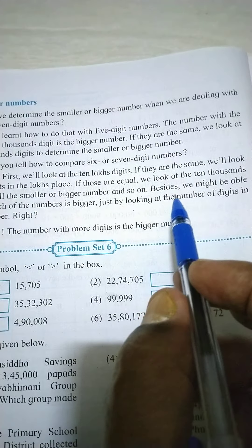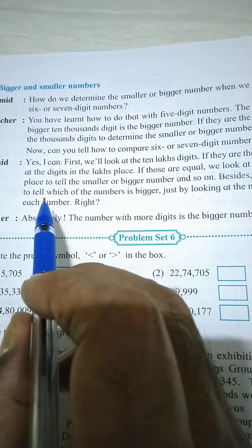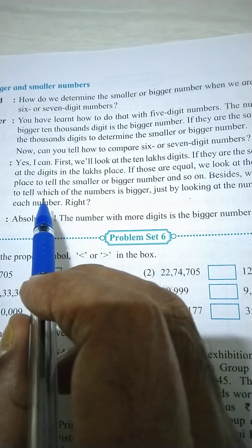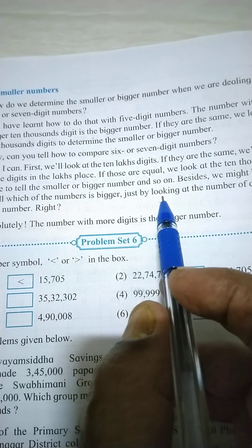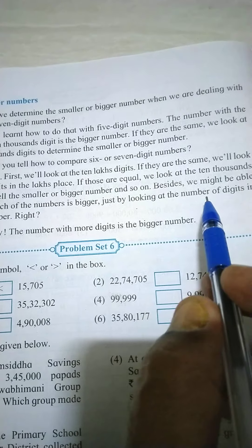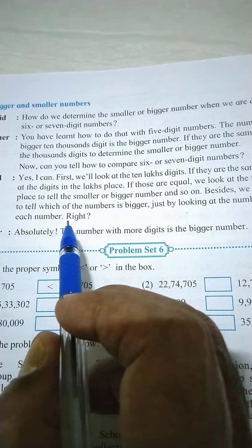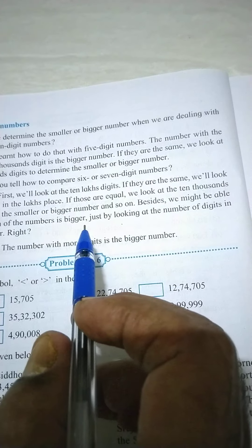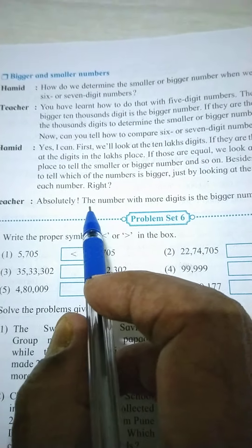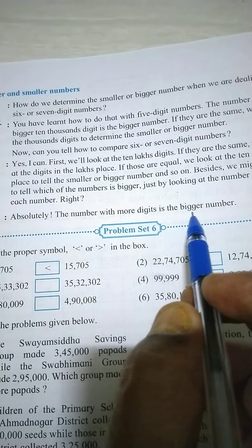Hello children, see here. Now we learn mathematics of class 5: bigger and smaller numbers. How do we determine the smaller or bigger number when we are dealing with six or seven digit numbers?